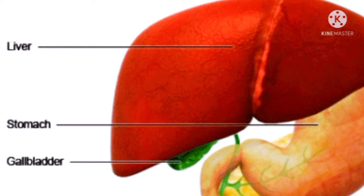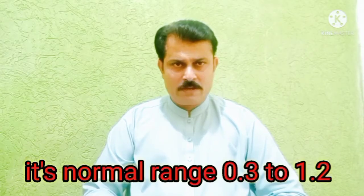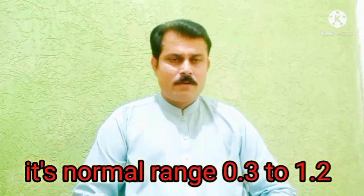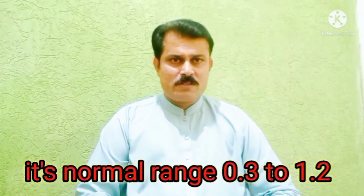The normal range of bilirubin is 0.3 to 1.2. This is the normal value: 0.3 to 1.2. Now I want to tell you about the major causes of bilirubin. I have to show you 4 major causes of bilirubin.